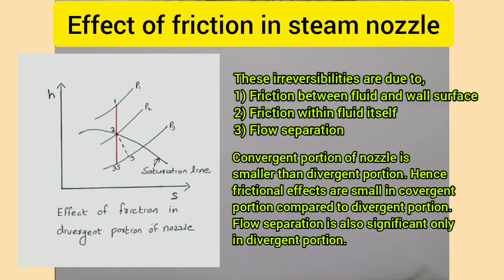For a convergent-divergent nozzle, the convergent portion of the nozzle is smaller than the divergent portion. Therefore, wall friction and friction within the fluid is small in the convergent portion compared to the divergent portion. Flow suppression occurs when the angle of divergence is made too large, which creates strong turbulence resistance near the nozzle wall. Thus, the included angle of the divergent portion is usually kept at 20 degrees.